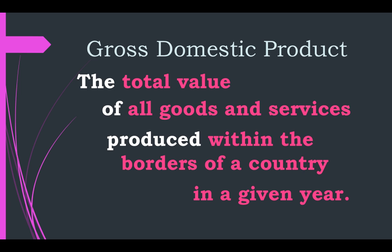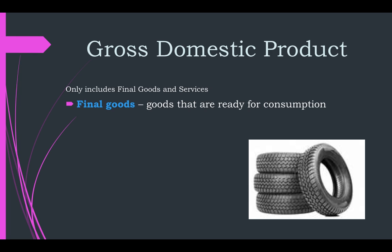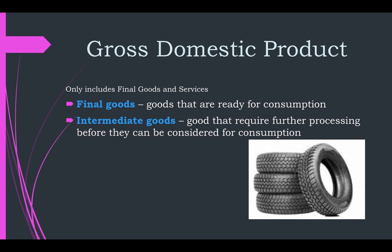GDP only includes final goods and services — goods that are ready for consumption with nothing else needed to go into them: a car, a book, a record, a hat. We contrast that with intermediate goods, which require further processing before they can be considered for consumption. For example, when Chevrolet or Audi or Mercedes buys tires, those are not counted as part of GDP because they're going to be put on a car that will then be bought. The reason we don't count intermediate goods is because it would lead to double counting and overstate the real value of our GDP.